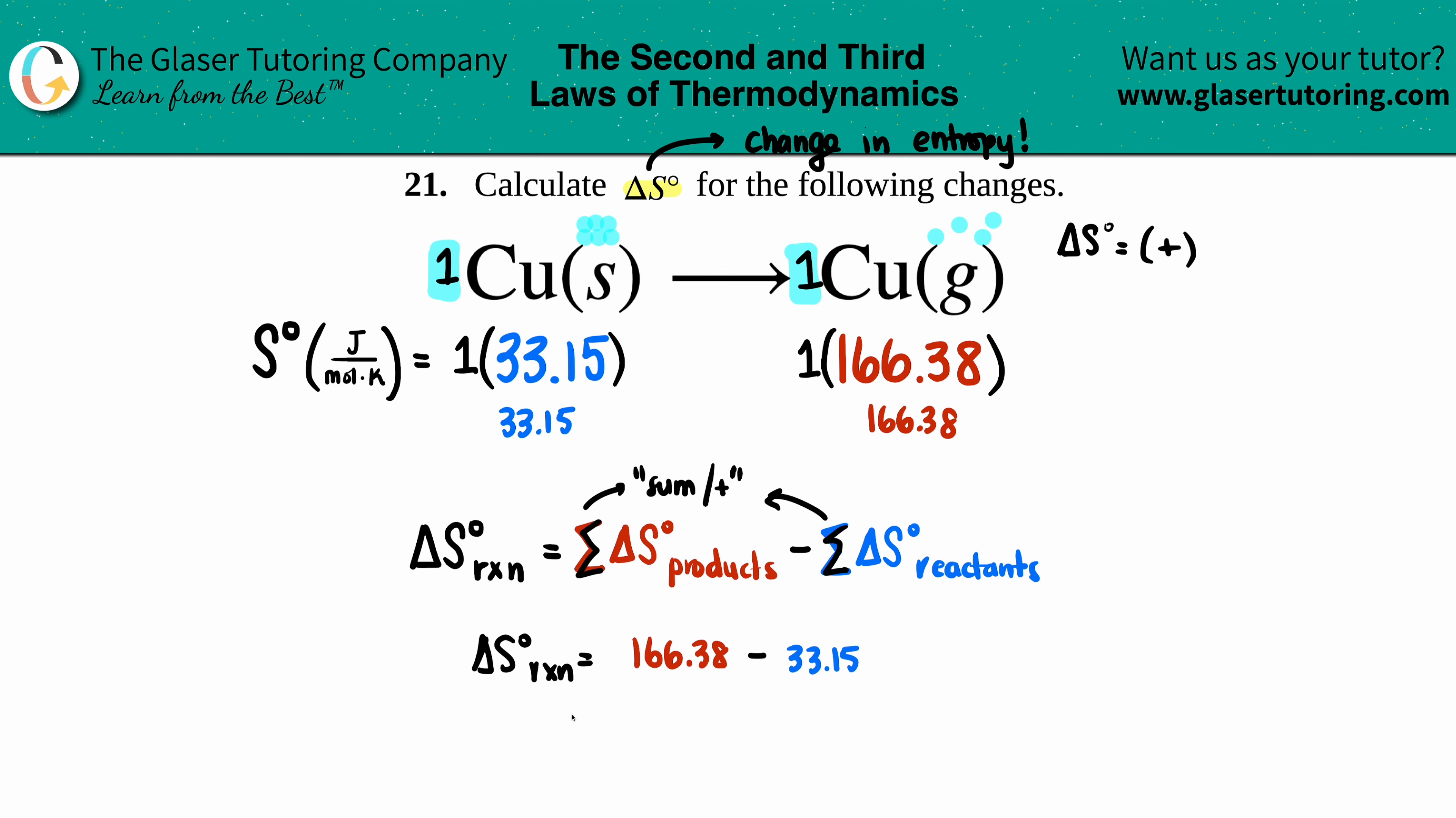And now I'm going to get my answer, my delta S value for my whole entire reaction. As you can see it's going to be a positive value and we guessed correctly, so we know we're on the right track. 166.38 minus 33.15, I get 133.23.